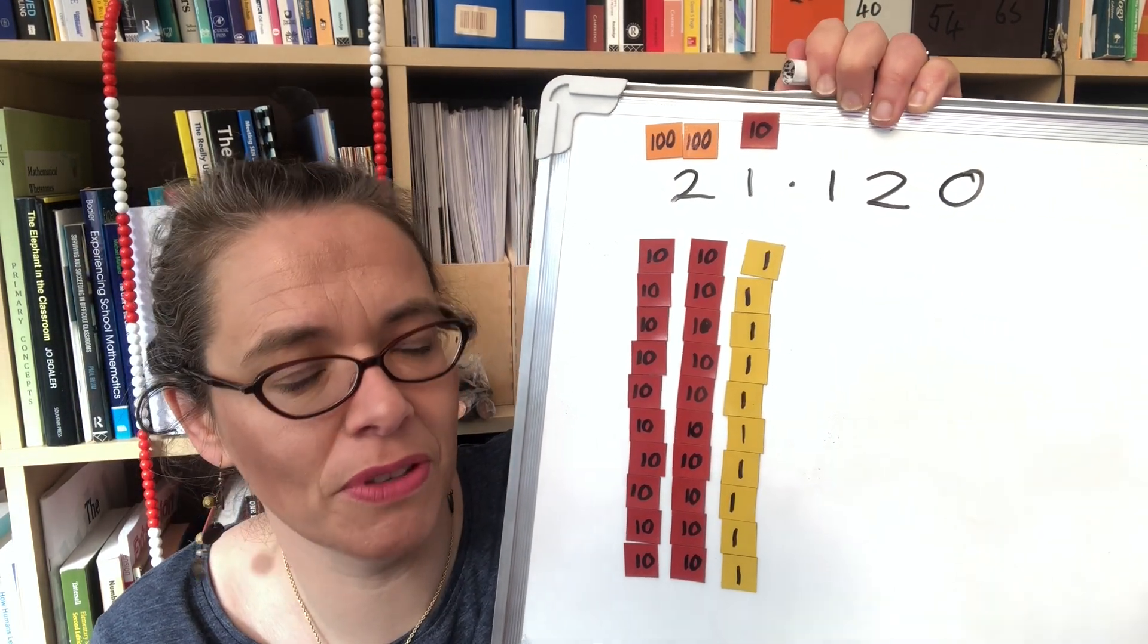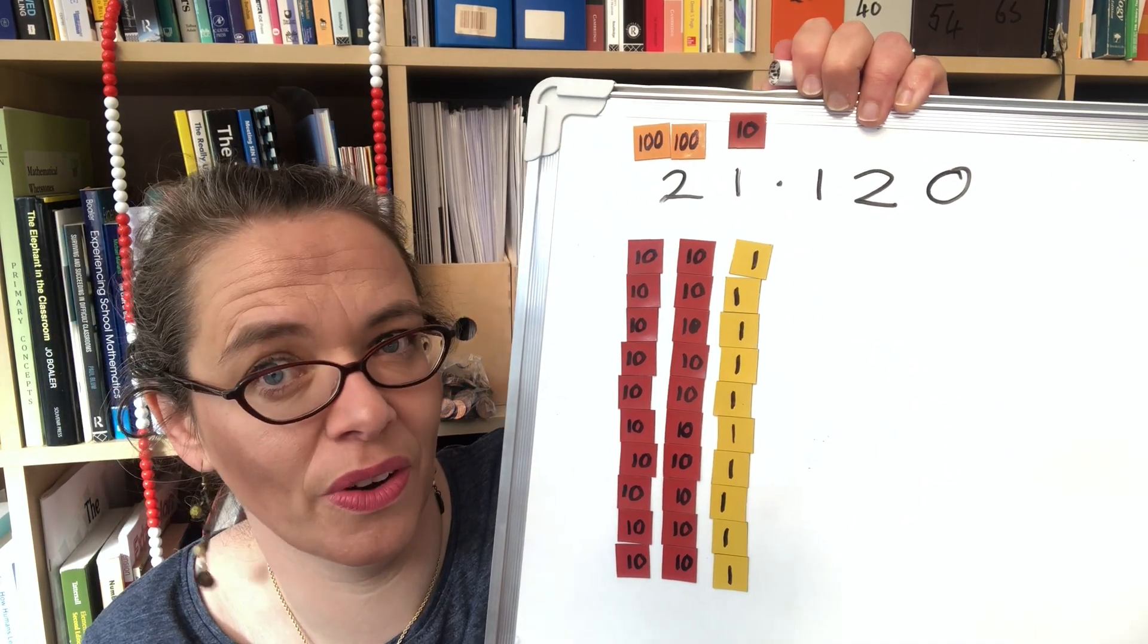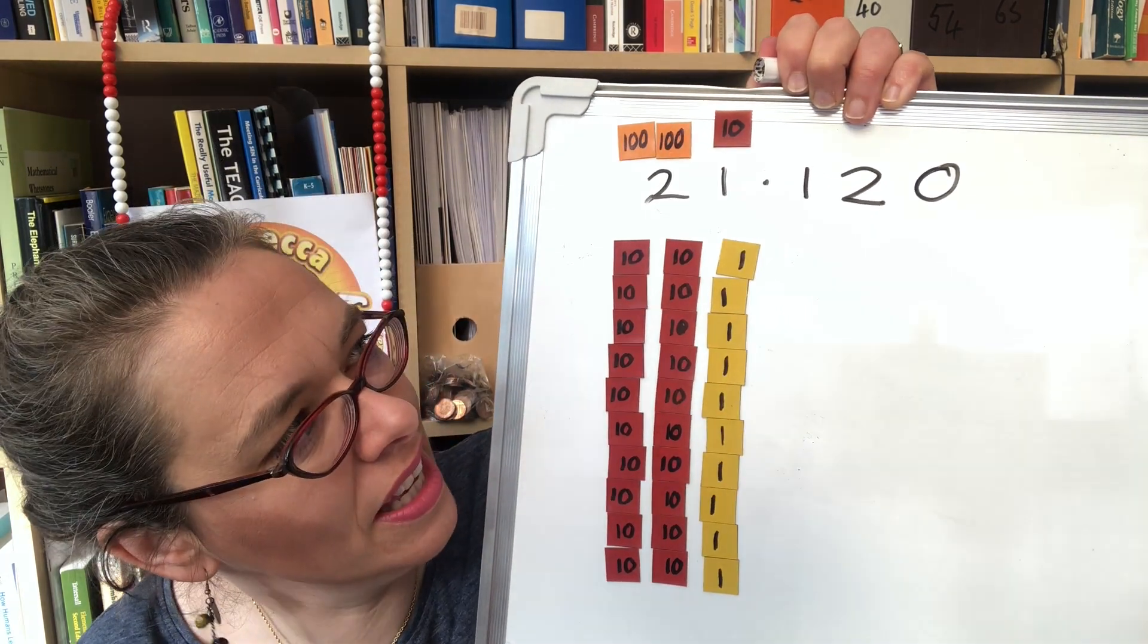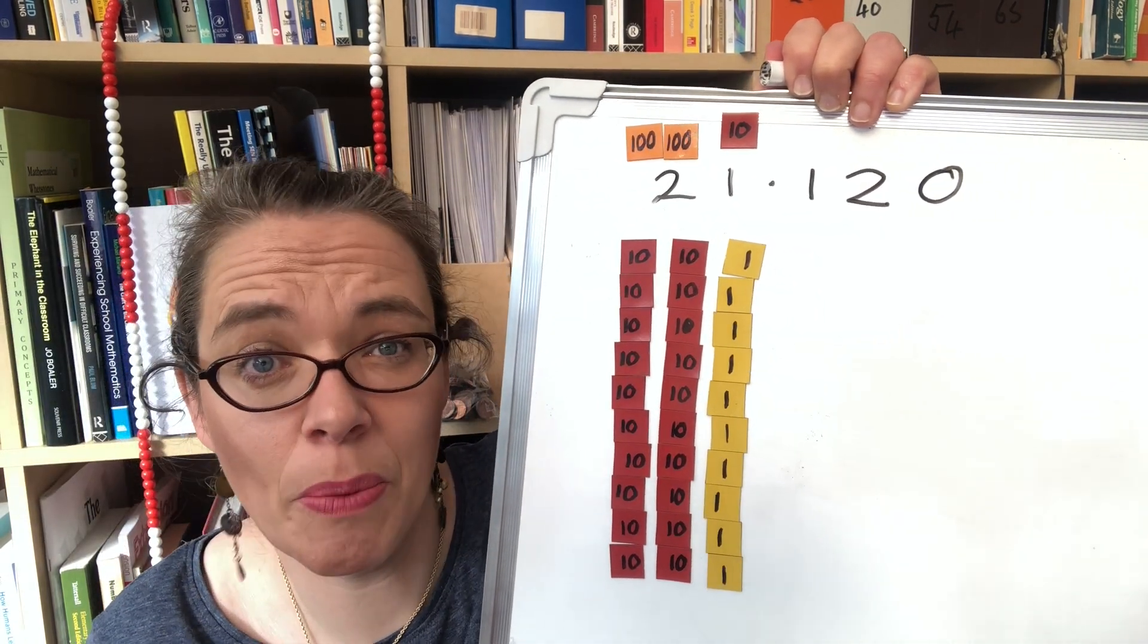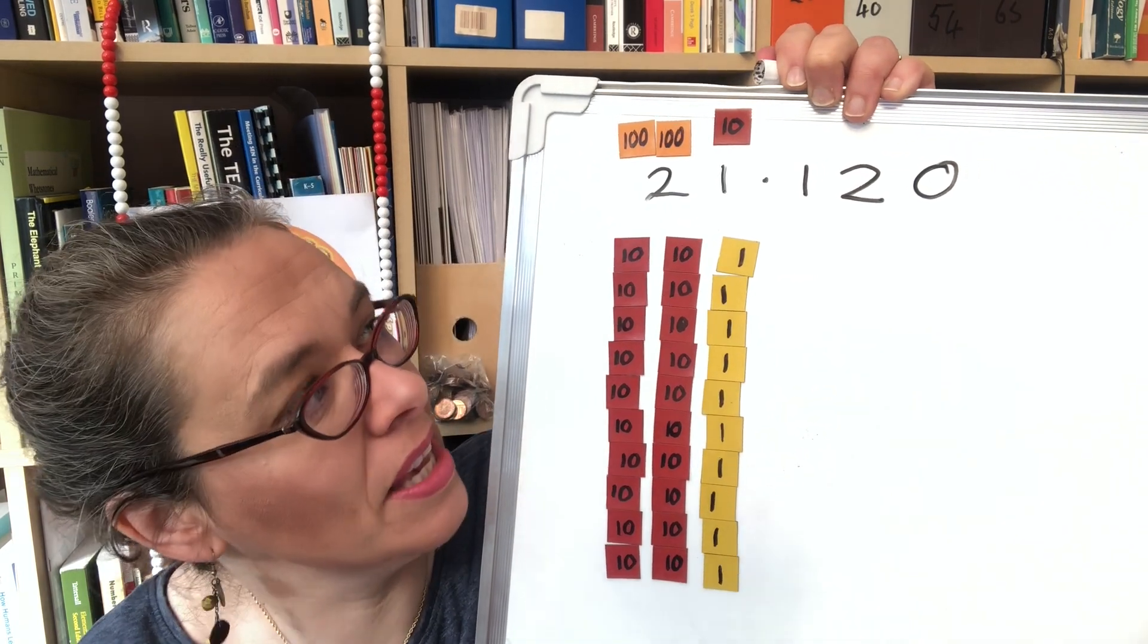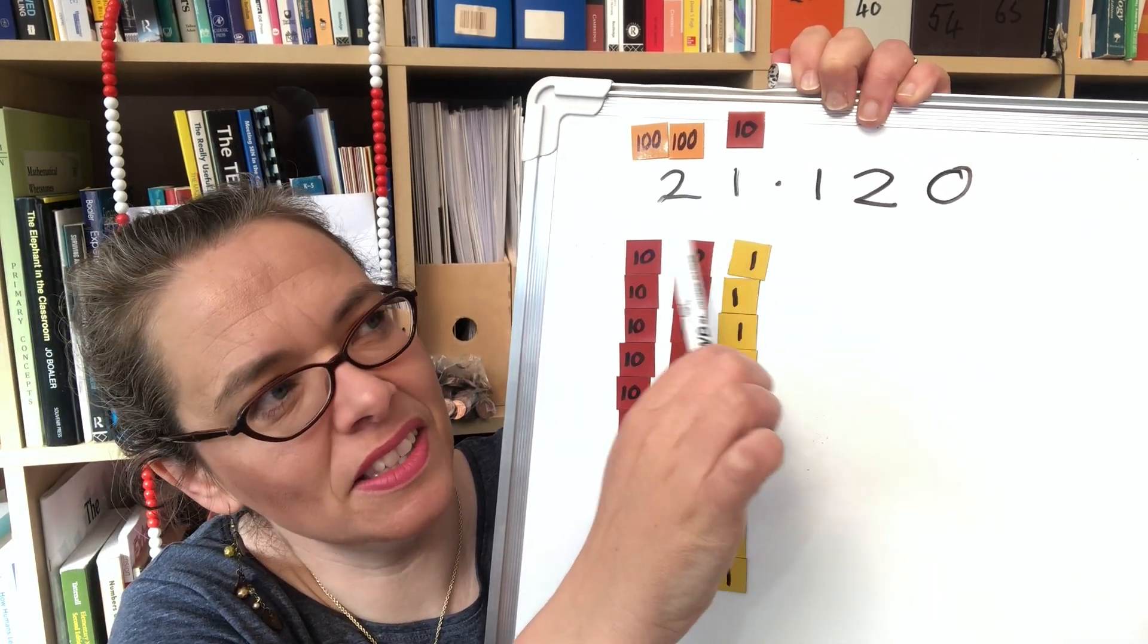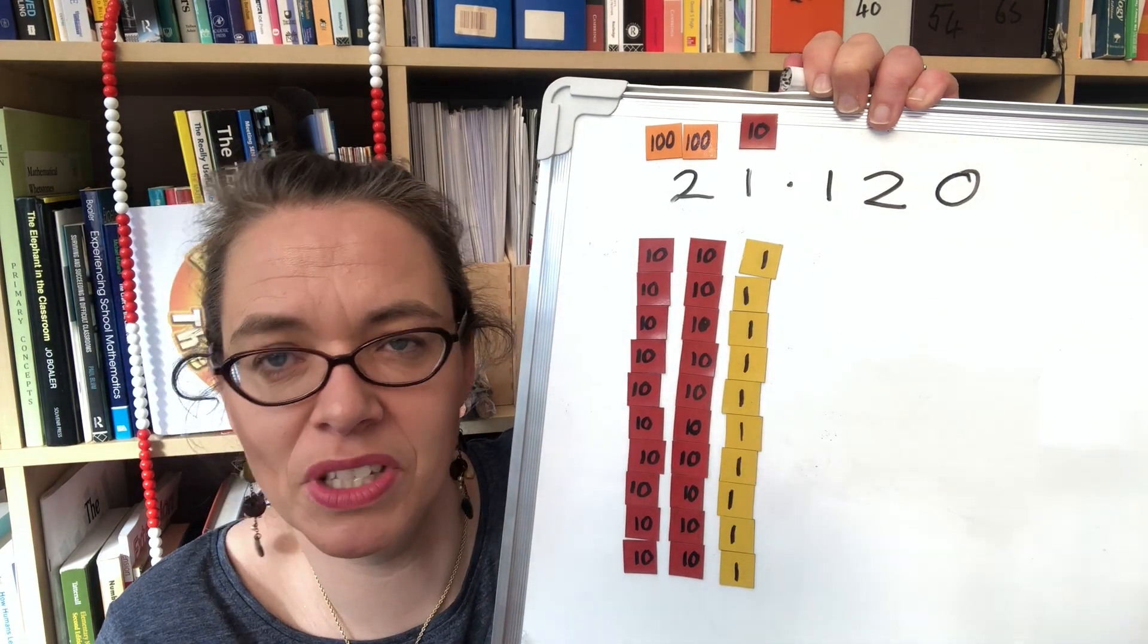They should be able to unravel for themselves that something's gone wrong and hopefully they can start to think through approximately what the answer might be. Well it's a bit above 20 times 10 so you'd expect the answer to be a bit above 200.